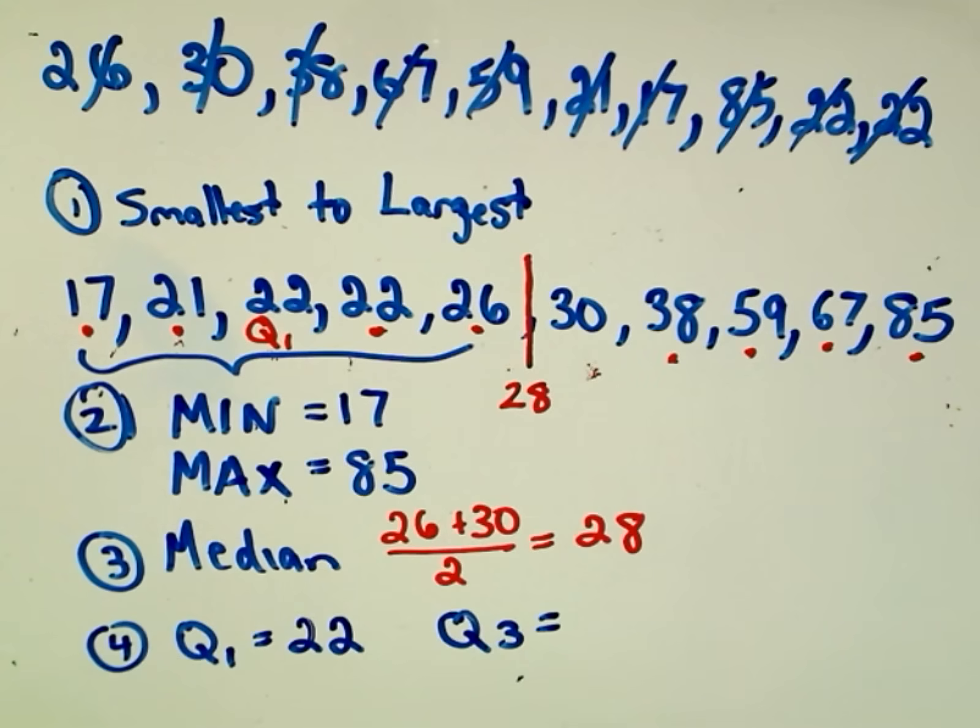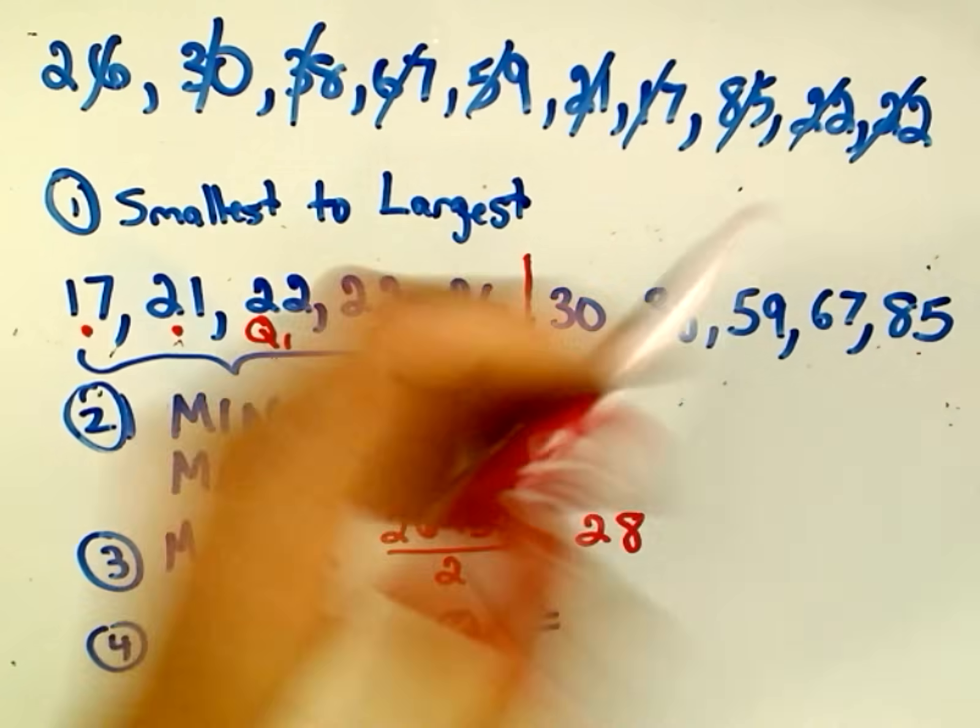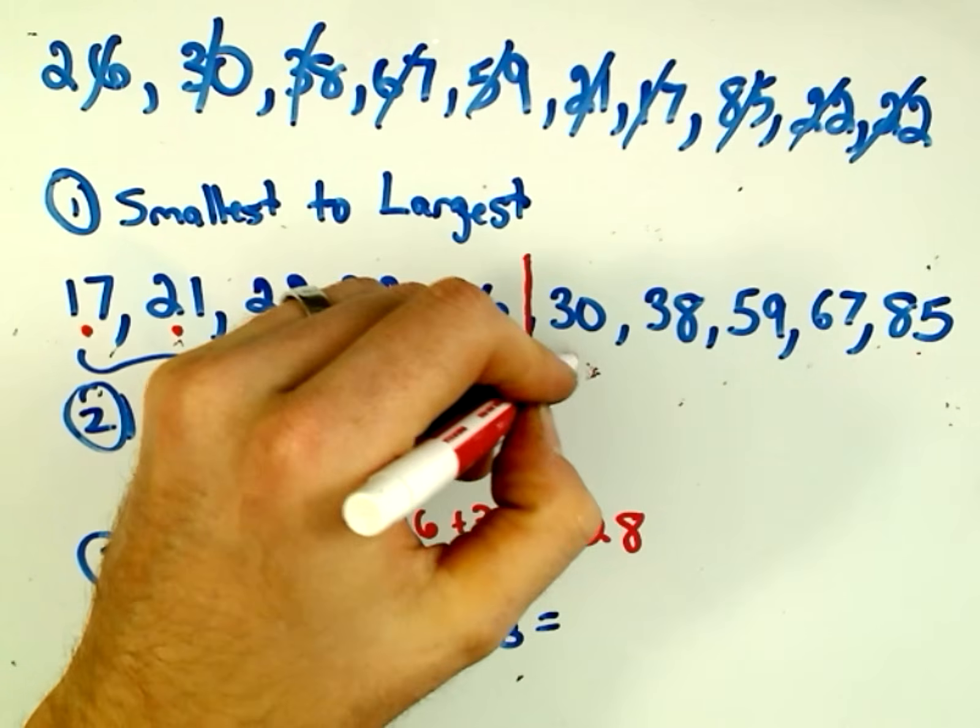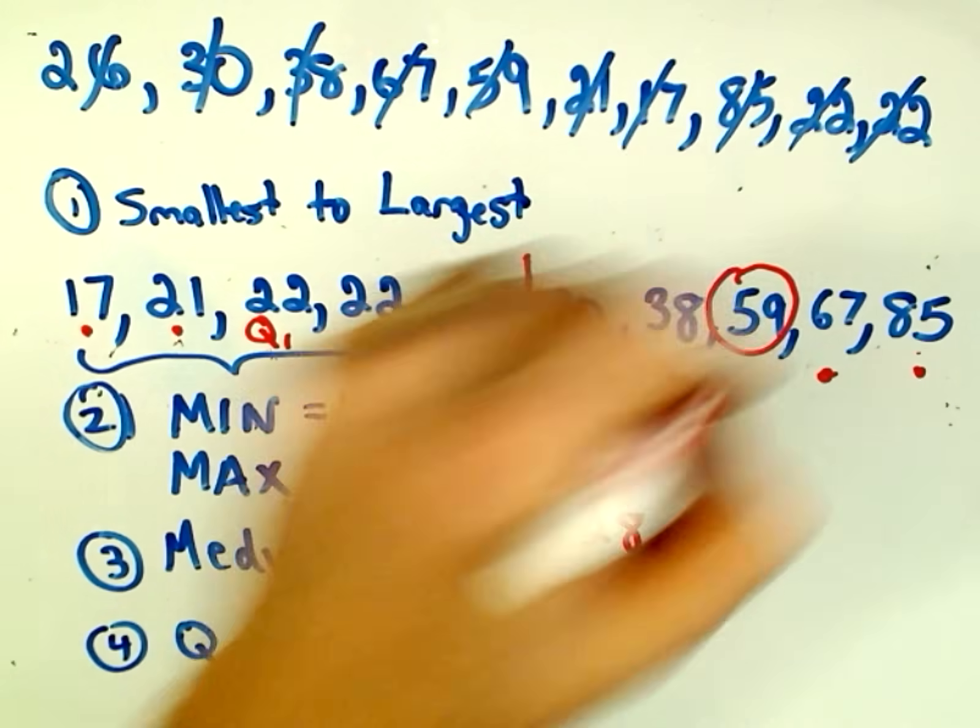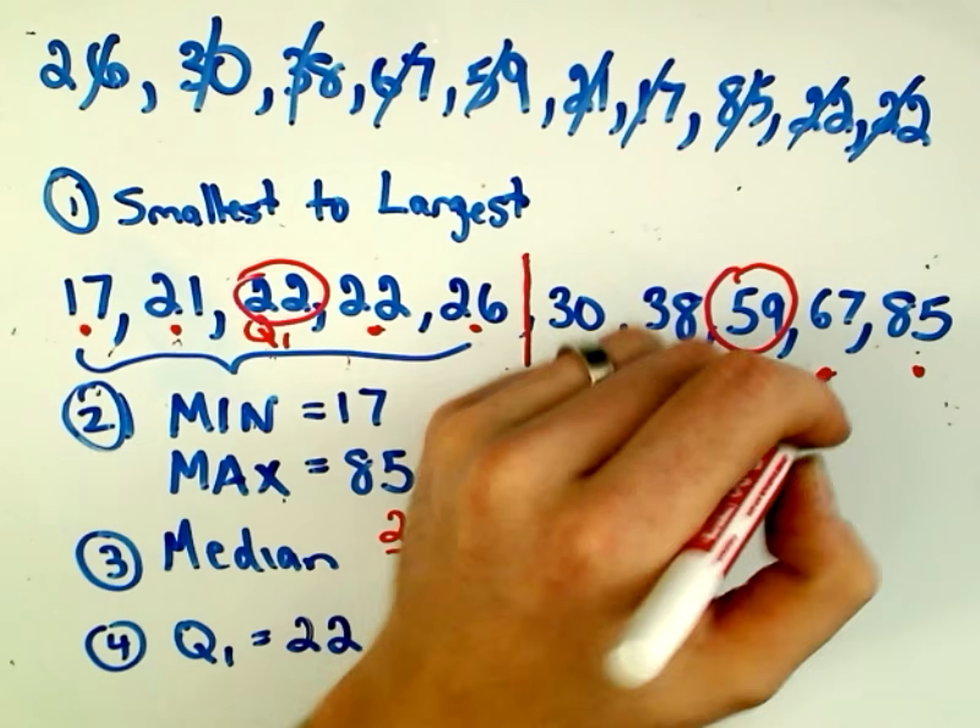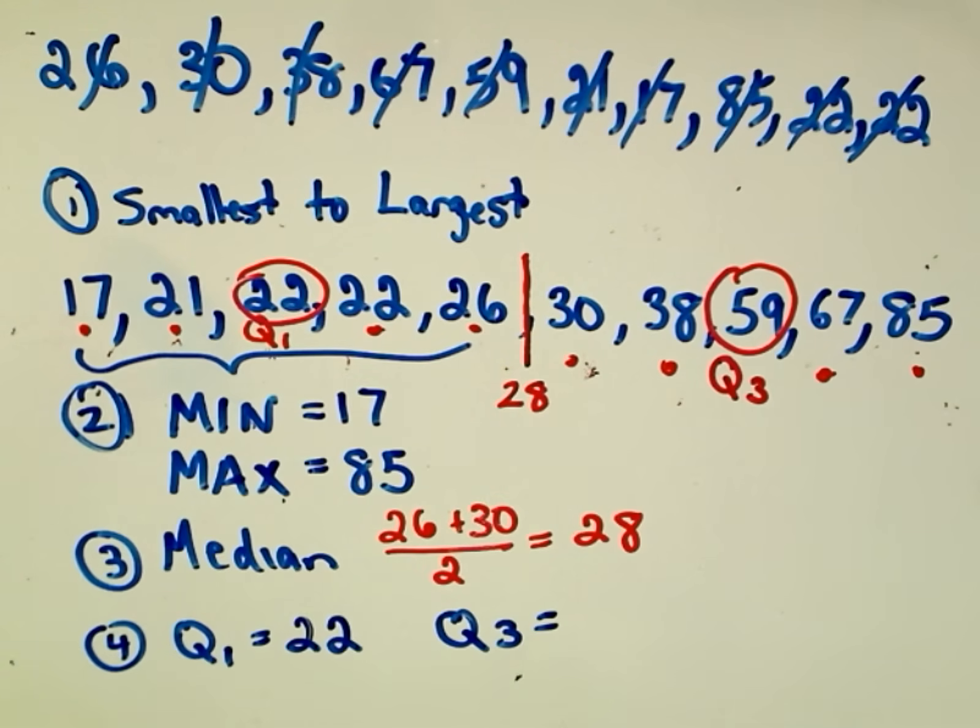And then we can do the same thing to find the third quartile. So notice if we pair them up, or again, you can just count, there's five in this case, so they pair up, they pair up. The middle part's going to be just like it was in the first part. This will correspond to the value for our third quartile.